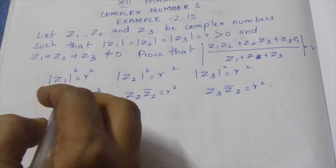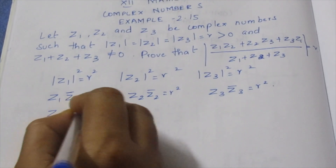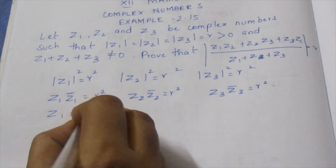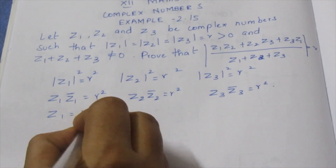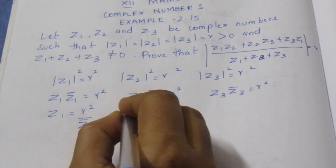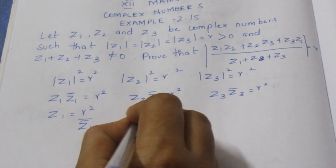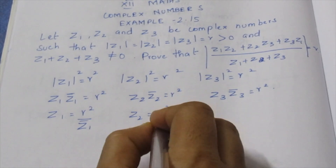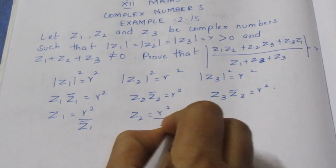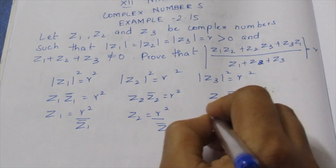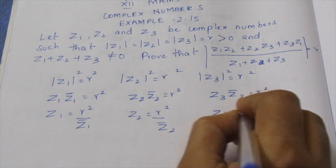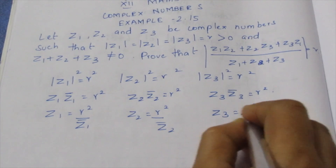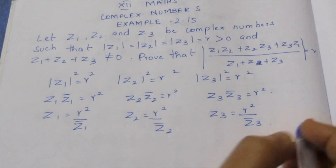Similarly, Z2 into Z2-bar equals R squared, and Z3 into Z3-bar equals R squared. Therefore, Z1 equals R squared divided by Z1-bar, Z2 equals R squared divided by Z2-bar, and Z3 equals R squared divided by Z3-bar.